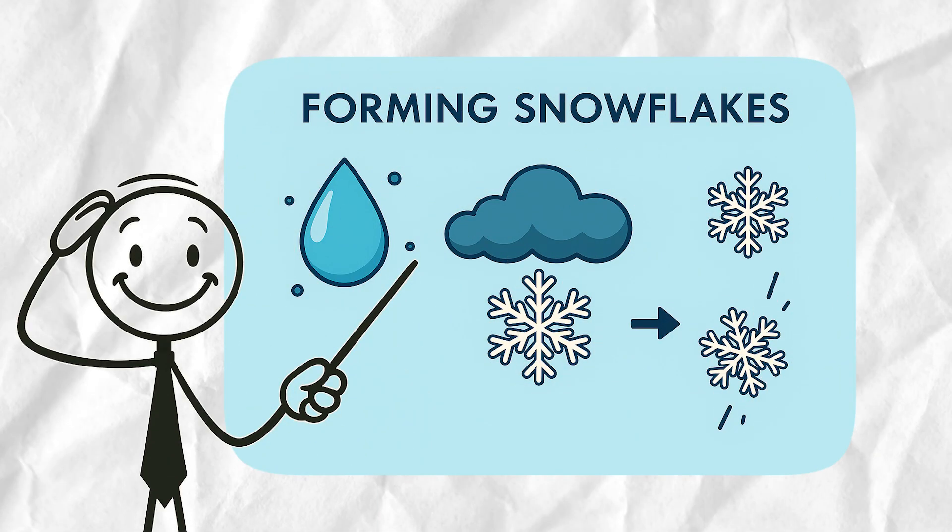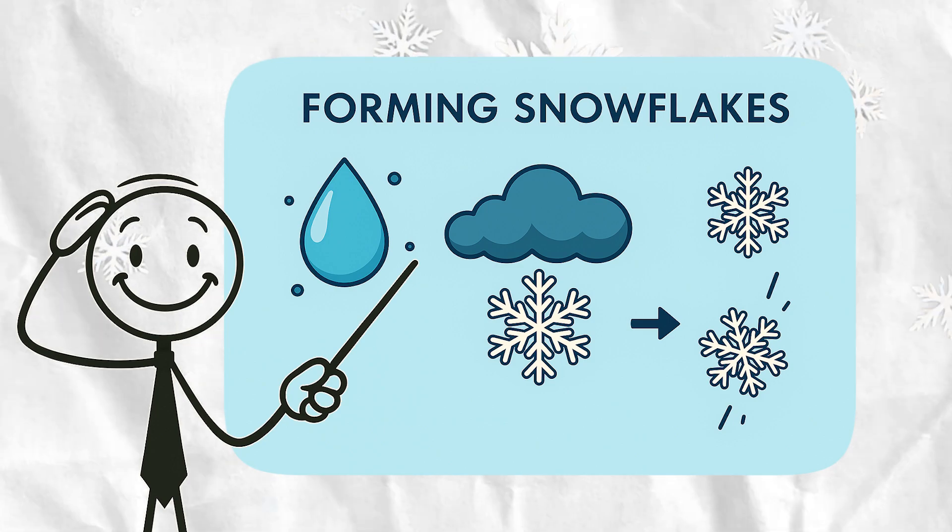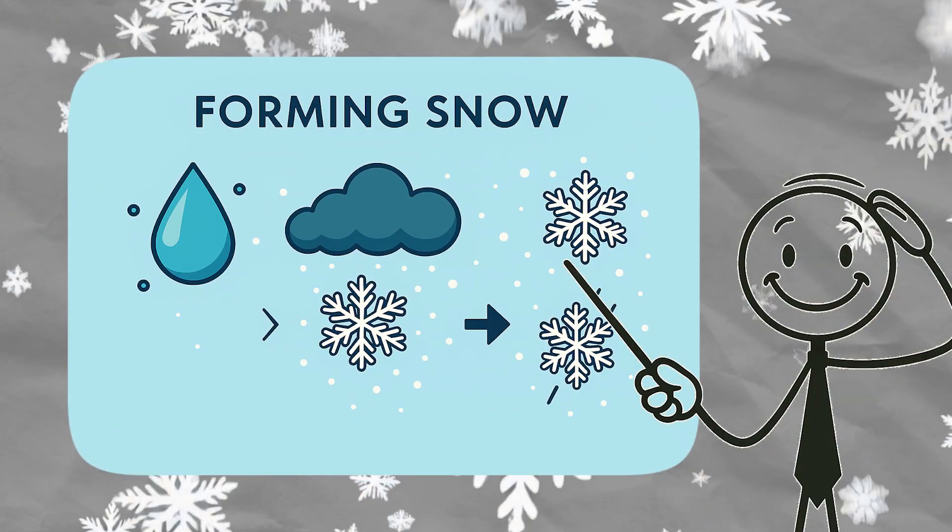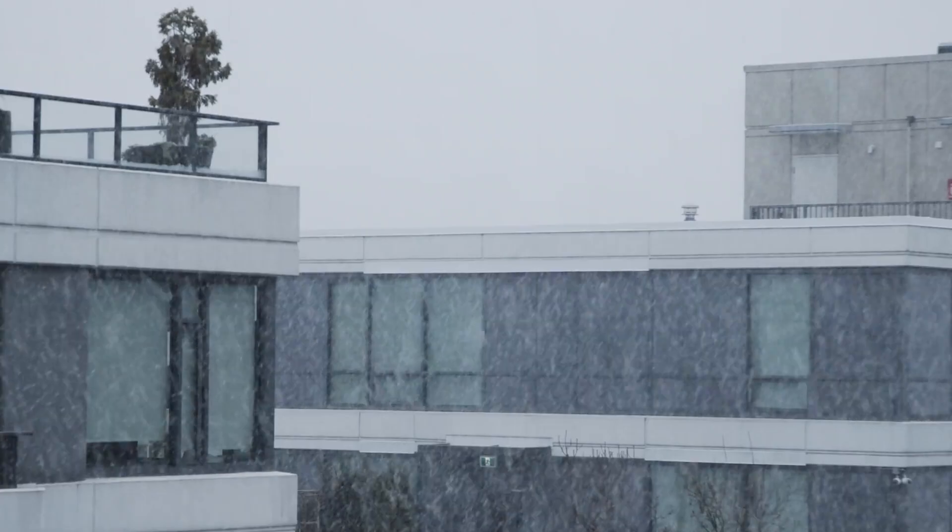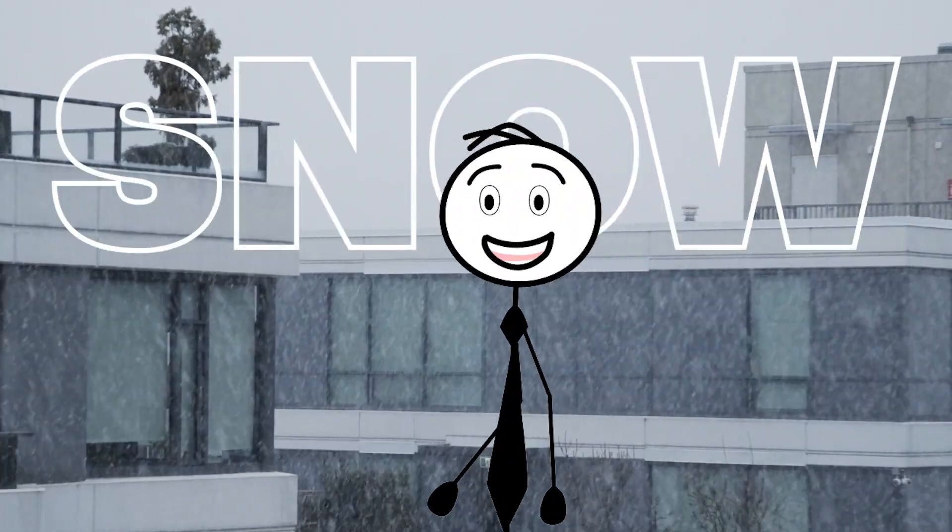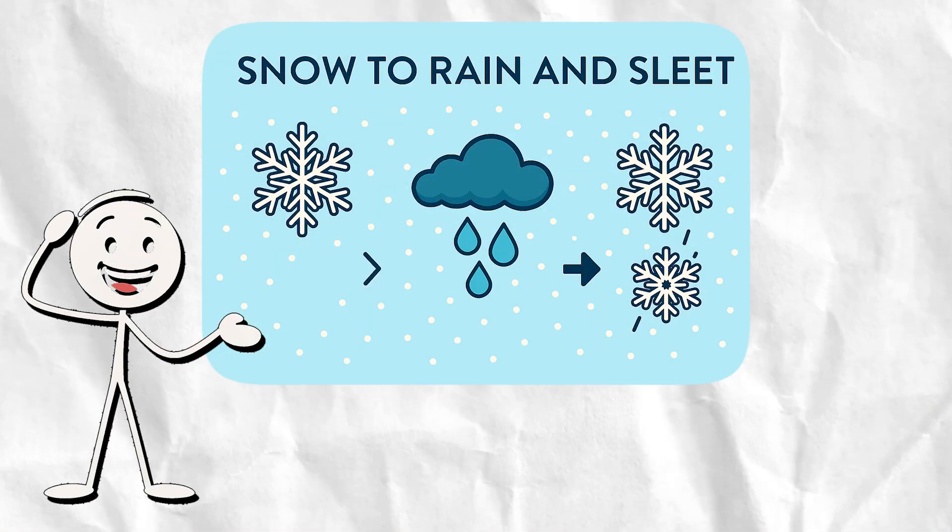These tiny crystals latch onto each other, forming snowflakes. But here's the catch. For snow to actually make it to the ground as snow, the air has to stay cold all the way down. If it warms up on the way, then we're dealing with something completely different. Like sleet or even rain.